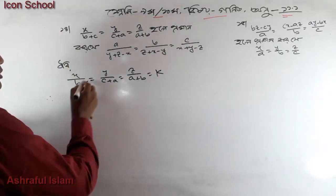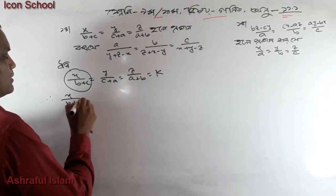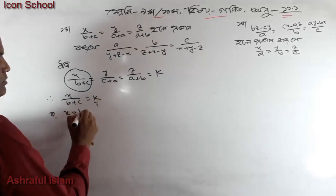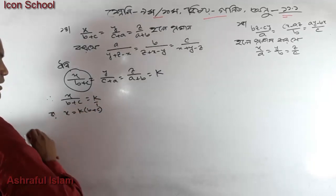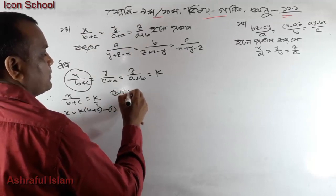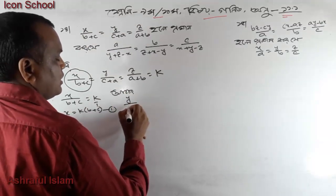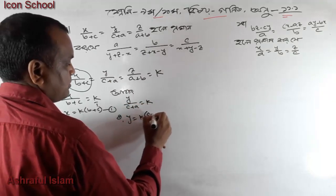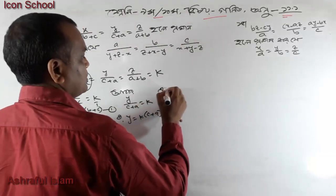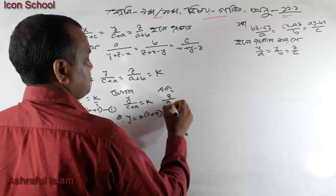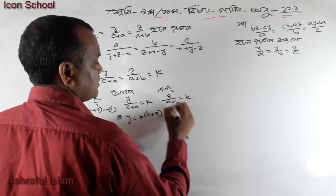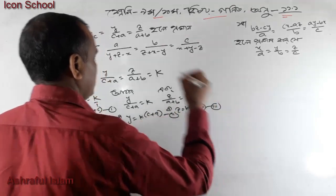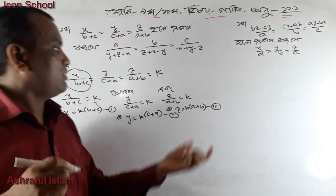Now, the same thing — let's say each ratio equals k. So x by b plus c equals k, y by c plus a equals k, and z by a plus b equals k. We write z by a plus b equals k, so z equals k into a plus b. This is 2 and this is 3. So it's 3.